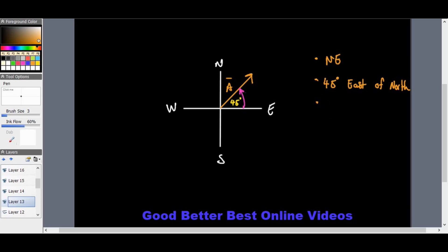If this is 45 degrees here, it's also 45 degrees on the other side, so it can also be 45 degrees north of east.